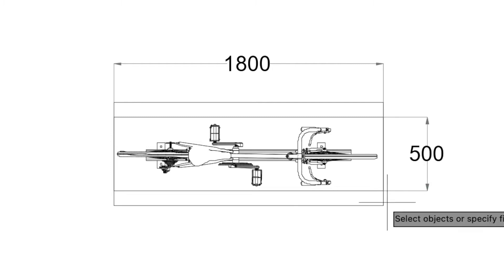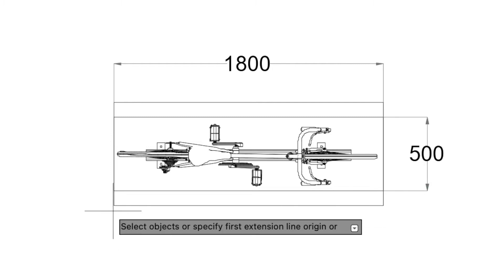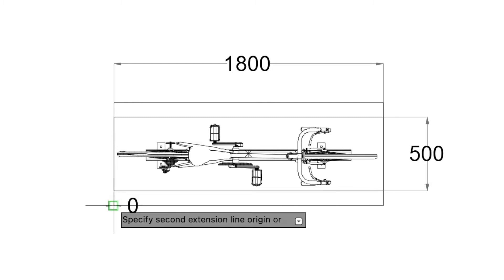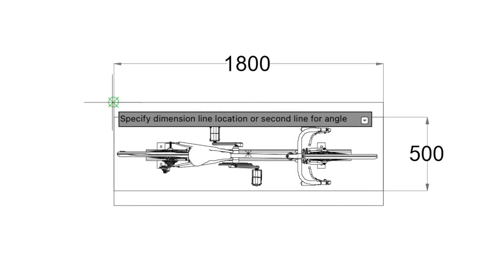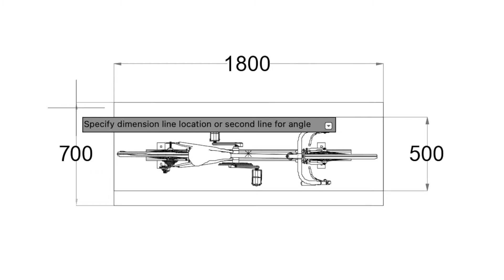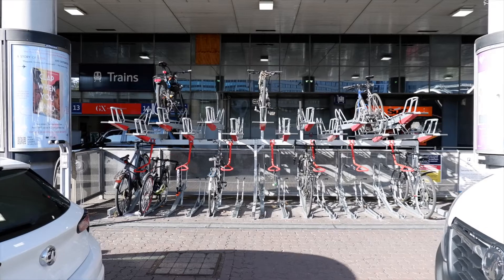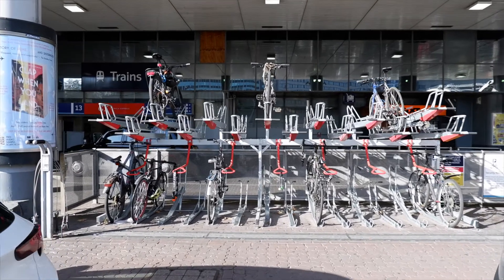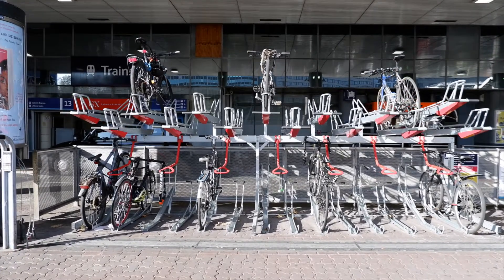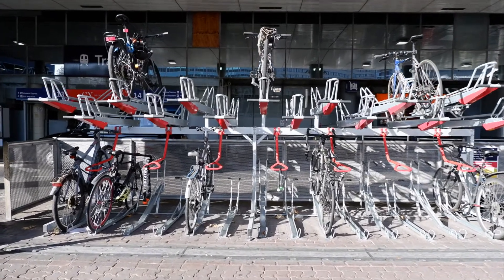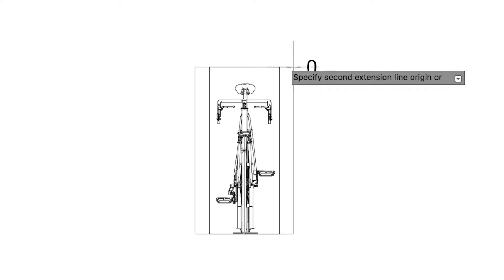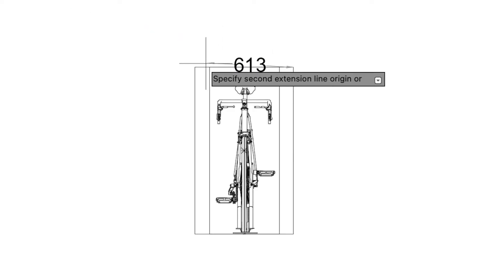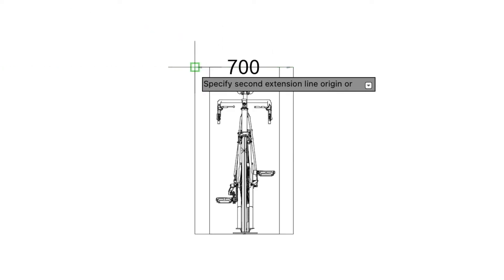The space required for a horizontal parking rack is determined by the length of the bike and the handlebar width required. Vertical parking is determined by the height and handlebar width. Double stacking bikes requires taking into account all of these dimensions.